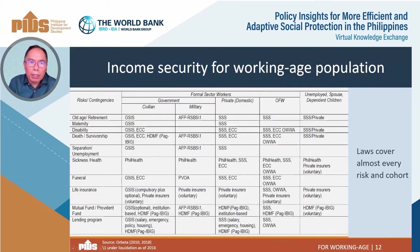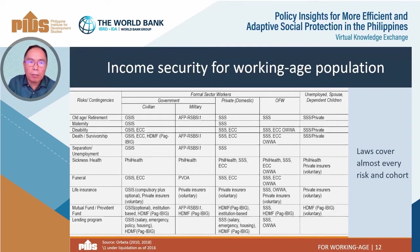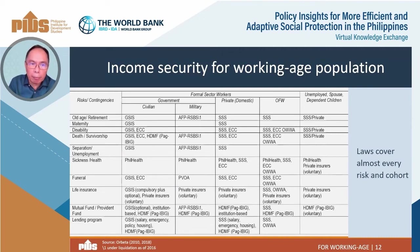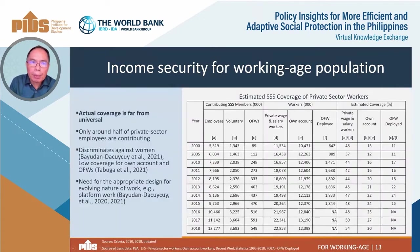Turning to programs for the working age population, my analysis around 2008 revealed that the laws cover almost all risks and cohorts. This table, with risks in rows and cohorts in columns, shows that there is an institution providing the needed service for each cell. For instance, we cover not only formal sector workers but also household help and informal sector workers. We recently added unemployment insurance in the new SSS law, RA 11192. The only exception is platform workers if they do not consider themselves as self-employed.